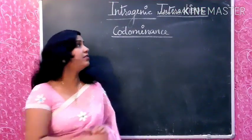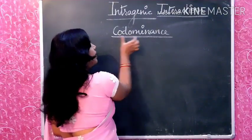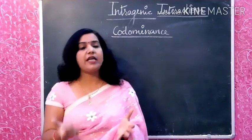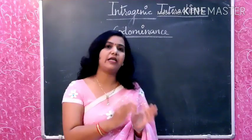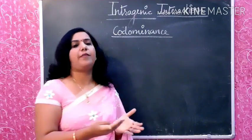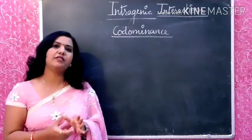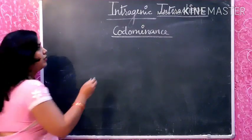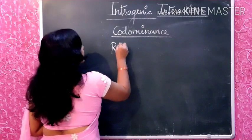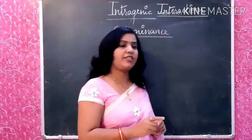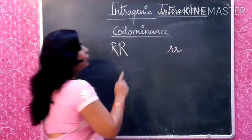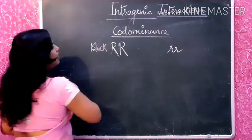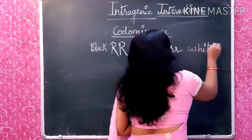The next intragenic interaction is co-dominance. Co-dominance means that two alleles express themselves fully and simultaneously — both alleles express independently and fully, with no dominant-recessive relationship. For example, in cattle, coat color was studied. The parents were black coat color and white coat color.